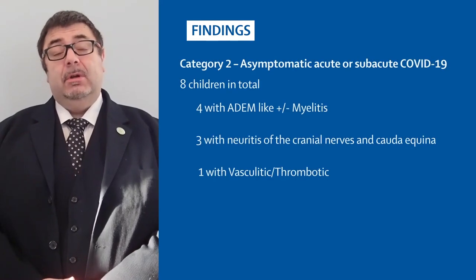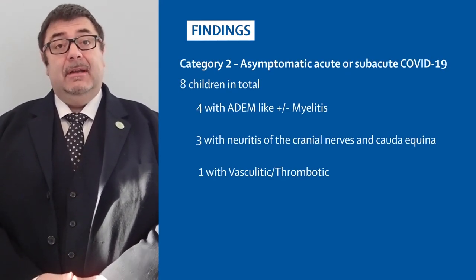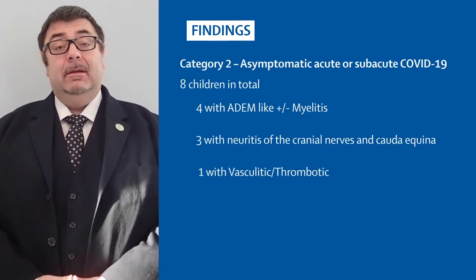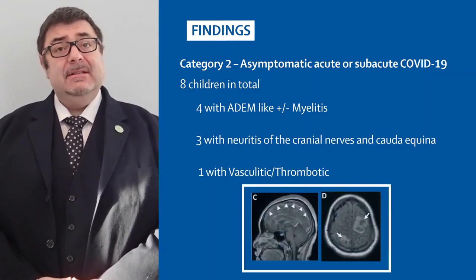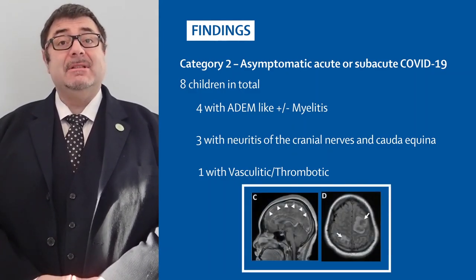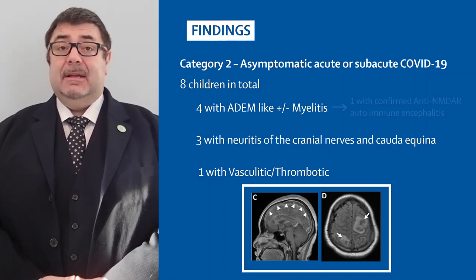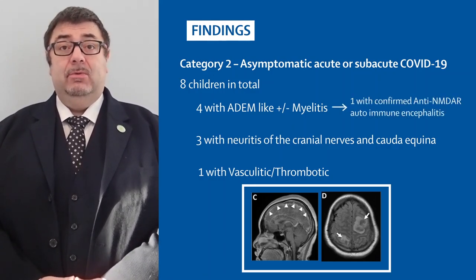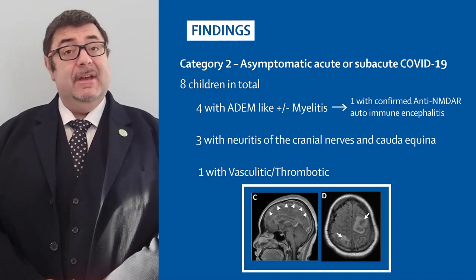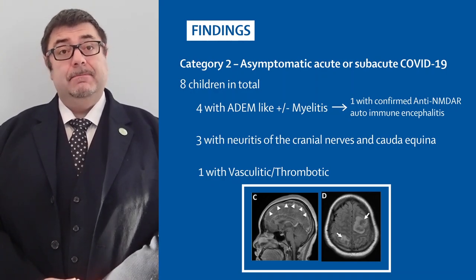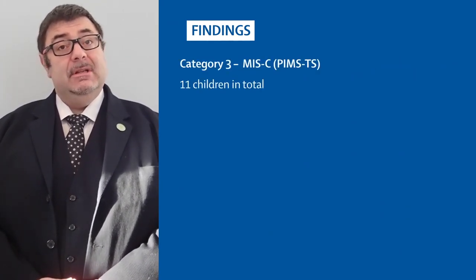Category 2 comprised eight children with the imaging findings shown here, but in addition, one child had a vasculitic thrombotic presentation. All of these children did well, except one child who remains ventilator-dependent over six months into their disease course.